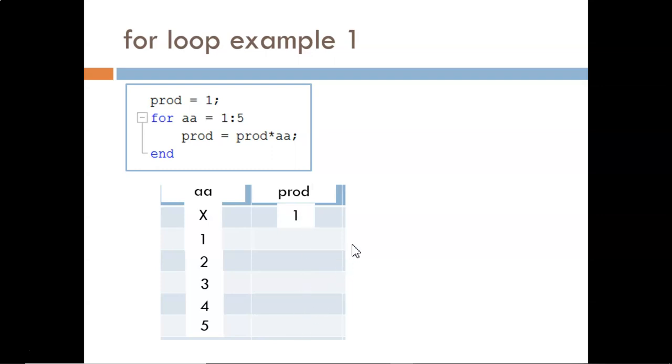Now to compute the prod values: the new prod value comes from the current prod value times the current aa value. Here, 1 times 1 equals 1. Next, 1 times 2 equals 2. Next, 2 times 3 equals 6. Next, 6 times 4 equals 24.